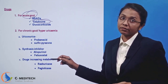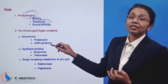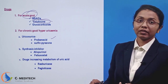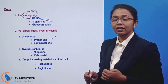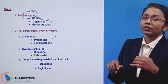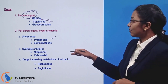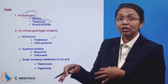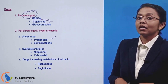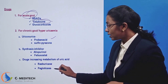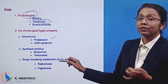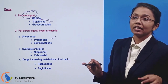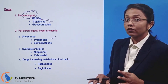For uric acid synthesis inhibitors, for example, allopurinol and febuxostat. Uricosuric agents — probenecid, also called sulfinpyrazone. Next, there is a parenteral formula called uric acid metabolism drugs — rasburicase and pegloticase, given by injection.